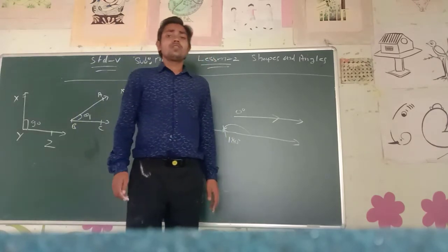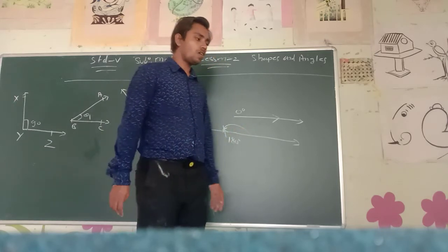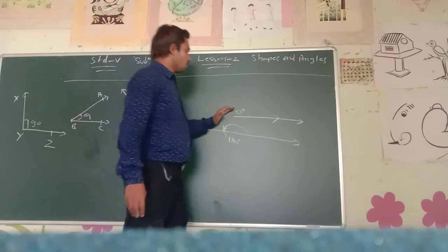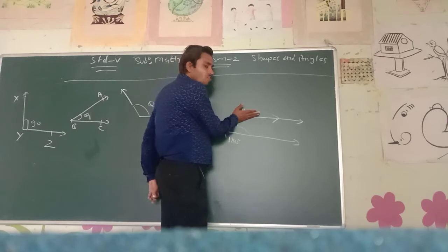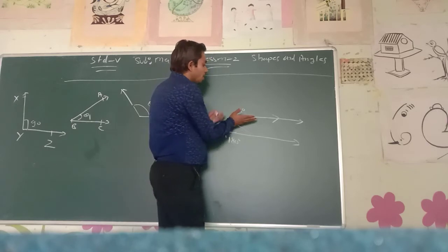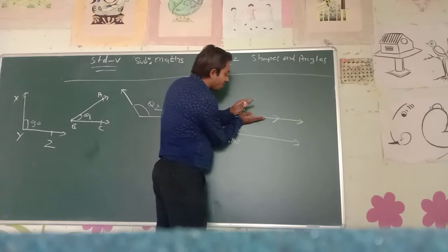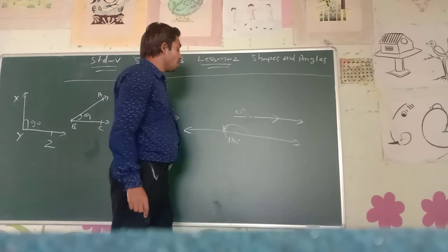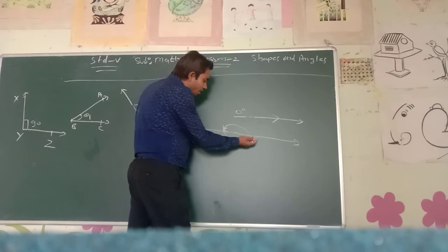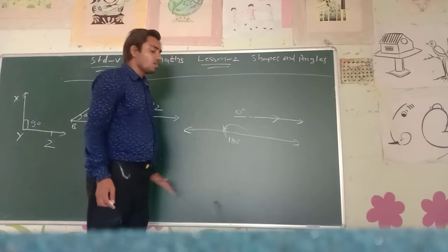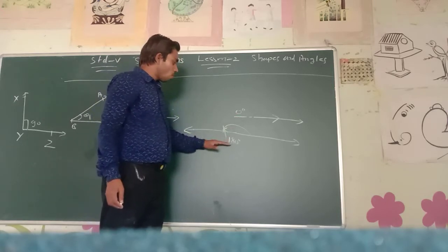There are different types of angles. The first is called zero degree angle. If both rays are coincident — one ray lying on the other ray — then it is called zero degree. When two rays move away from each other in a straight way, then it is forming 180 degrees. So this is called zero degree, and this is called 180 degrees.